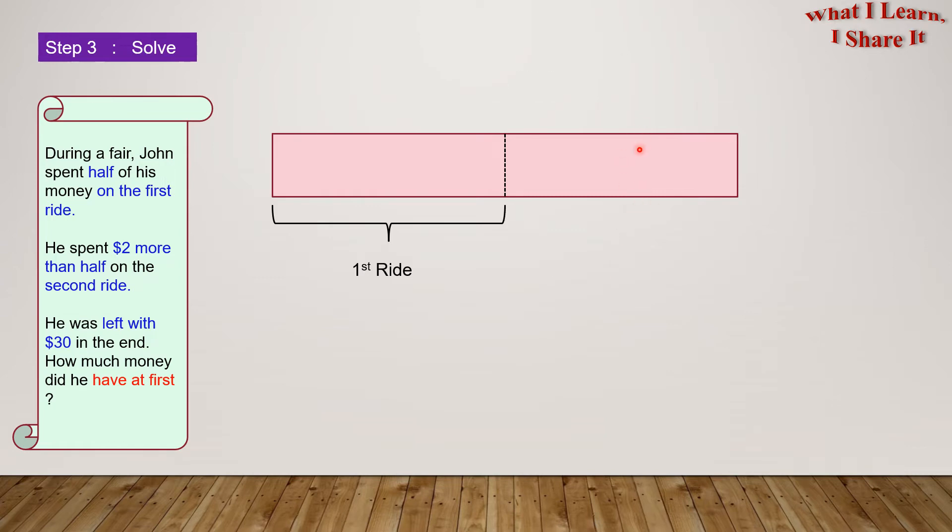Now, he spent $2 more than half on the second ride. Here is half of the remaining money. If this is half, then this one is also half. This means that these two halves are the same. Let's put two more dollars to it. Here is the money he spent on the second ride. Two dollars more than half of the remaining. And this is the money left, $30.